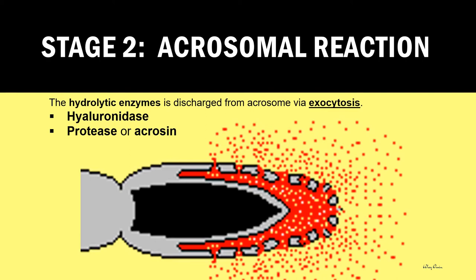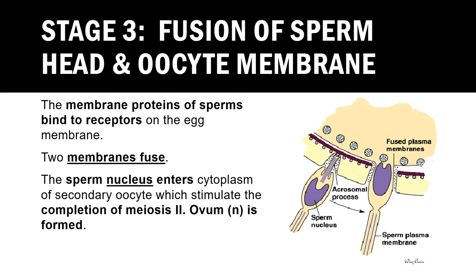After the zona pellucida is digested by the hydrolytic enzyme during the acrosomal reaction, it enables the binding of membrane proteins of the sperm to the receptor on the oocyte membrane. This leads to the third stage of fertilization, which is the fusion of the sperm head and oocyte membrane. Focusing on the diagram, we can notice that the two membranes are fused. When fusion occurs, the nucleus of the sperm will be released into the cytoplasm of the secondary oocyte.